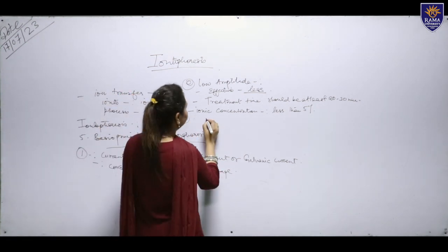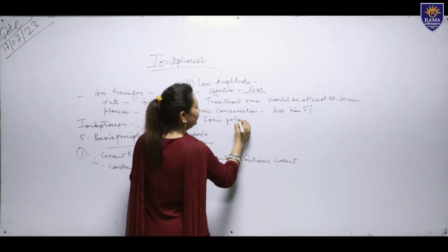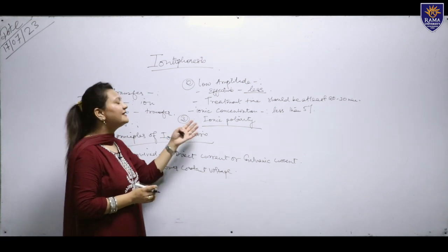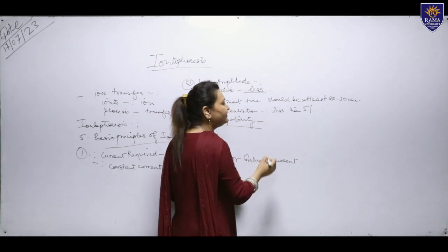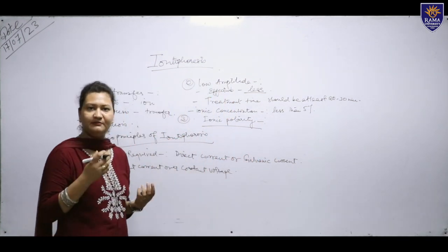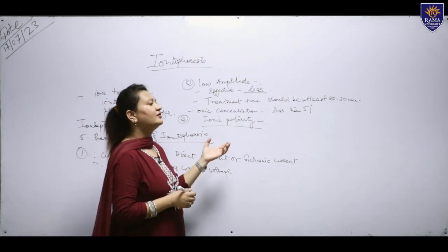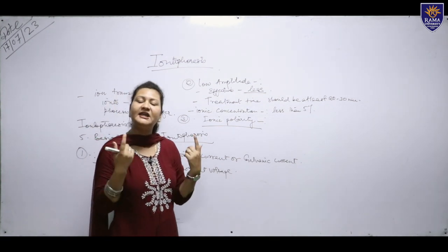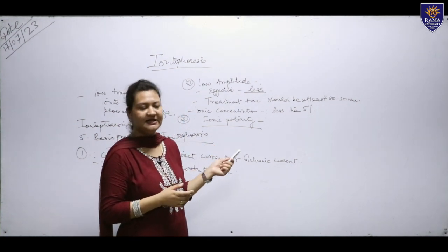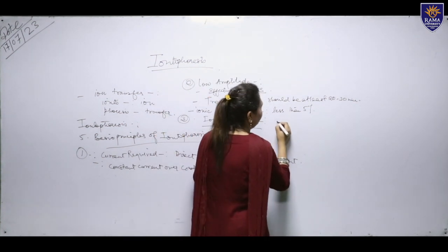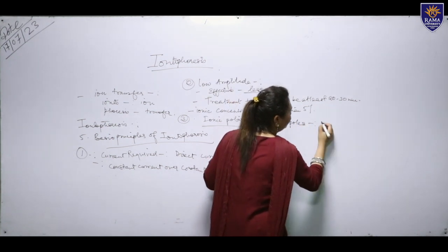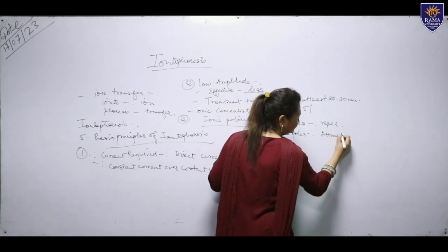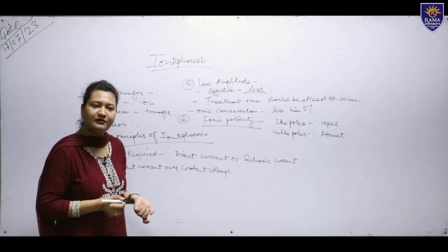The third basic principle is ionic polarity, which plays a major role in iontophoresis. If we do not consider ionic polarity, we cannot proceed with iontophoresis. The principle is similar to magnetism: like poles will repel and unlike poles will attract. The same pattern is used here for ionic polarity.